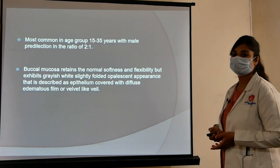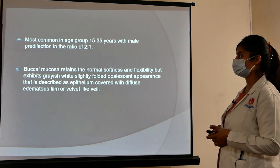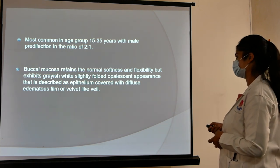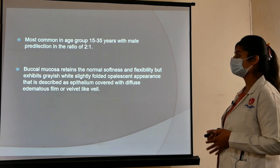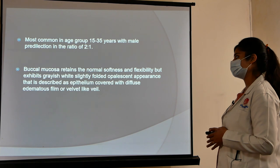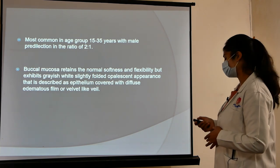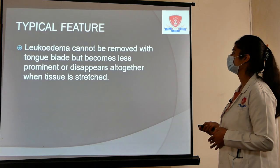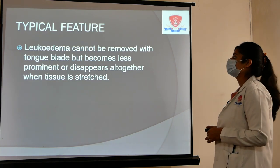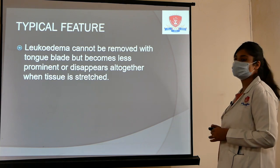Leukoedema is most common in the age group of 15 to 35 years, with a male predilection of 2:1. The buccal mucosa retains its normal softness and flexibility but exhibits a grayish-white, slightly folded or pearlescent appearance described as epithelium covered with a diffuse edematous film or velvet-like veil. A typical feature is that it cannot be removed with a tongue blade but becomes less prominent or disappears when tissue is stretched.